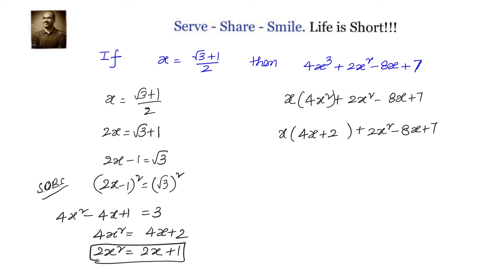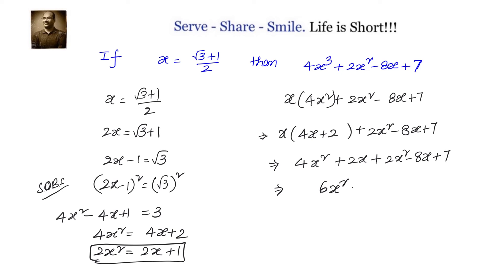Let us simplify that. Expanding x times (4x plus 2) gives 4x squared plus 2x. So the expression becomes 4x squared plus 2x plus 2x squared minus 8x plus 7. Combining the x squared terms: 6x squared minus 6x plus 7.